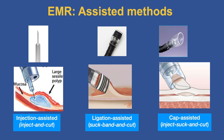For EMR, there are three assisted methods. The most common is injection-assisted: we inject a solution into the submucosa, raise it up, and then resect. The second is ligation-assisted: we suck the lesion into a cap mounted on the tip of the endoscope, deploy a band, and then resect. The cap-assisted method involves injecting first, then sucking the lesion into a cap attachment, and then cutting. The ligation-assisted also uses a cap, but the emphasis is on placing the band first, then cutting.